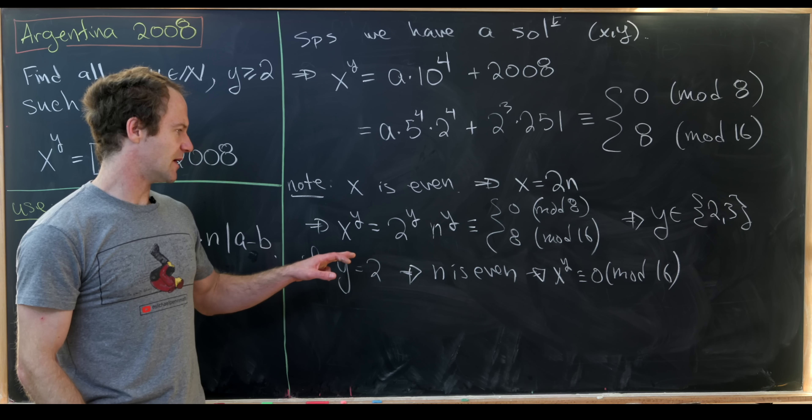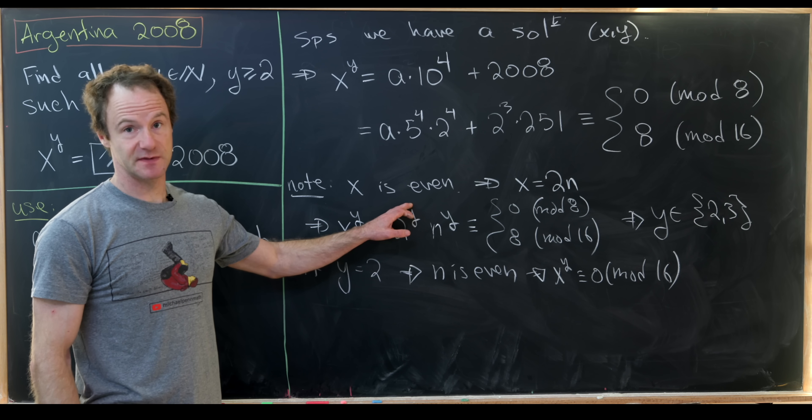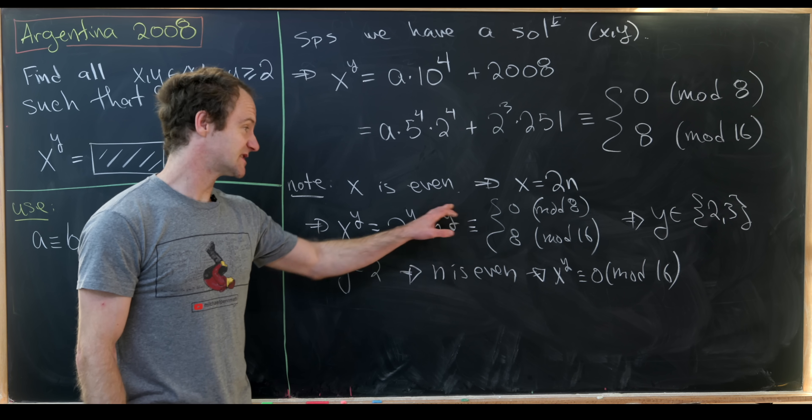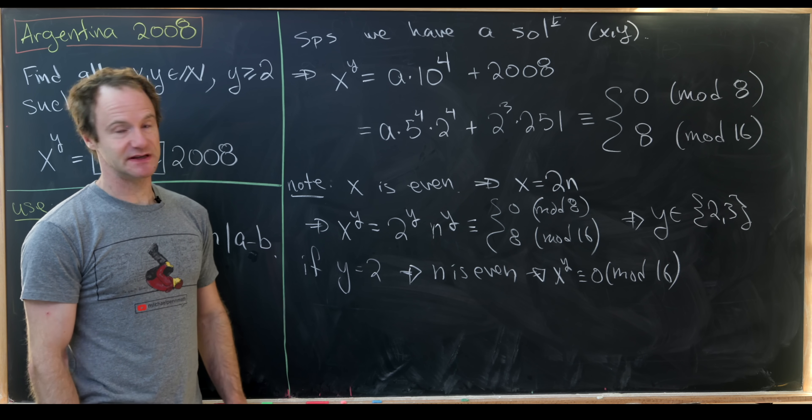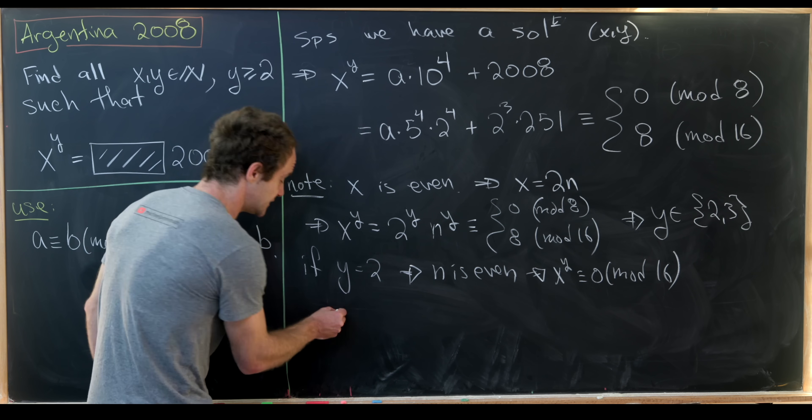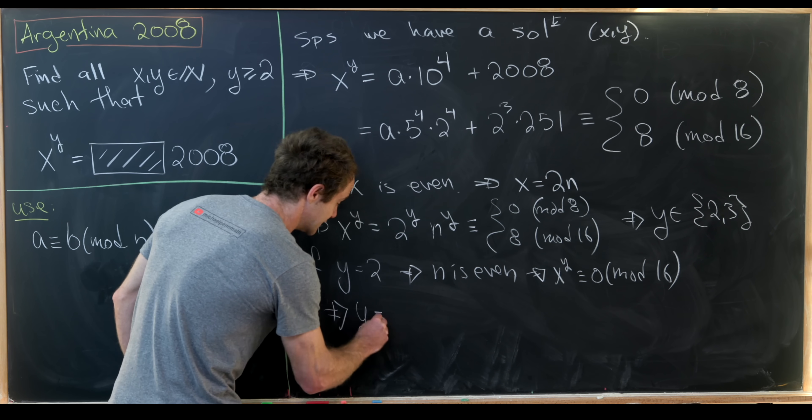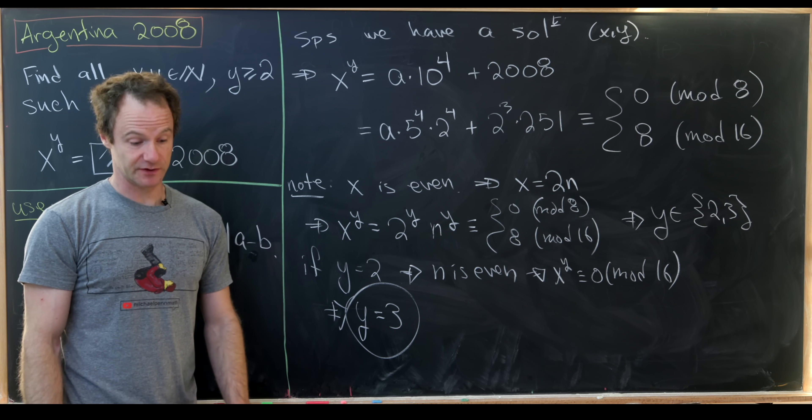Because we'll pick up a 2 to the 2 from this and we'll pick up at least a multiple of 4 from this n to the y. So that means y cannot be equal to 2. So that means we've restricted y all the way down to the number 3.